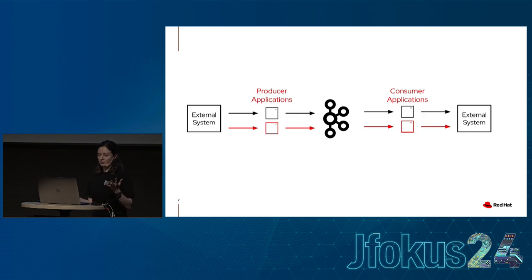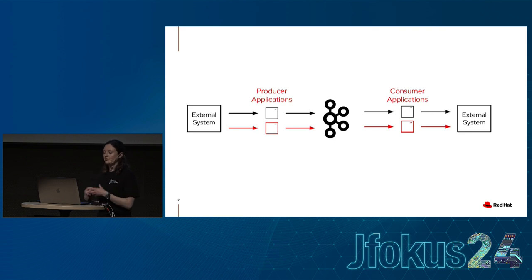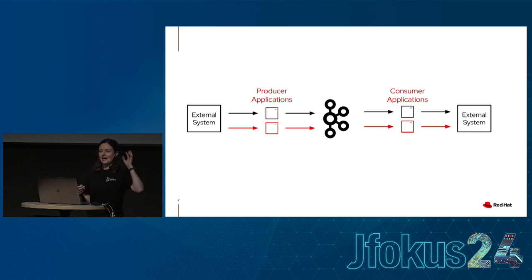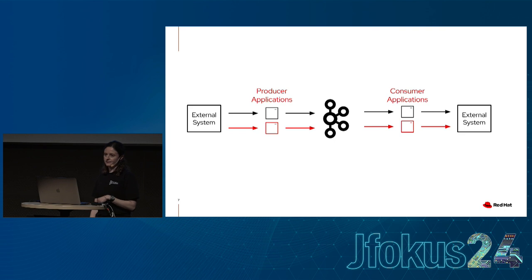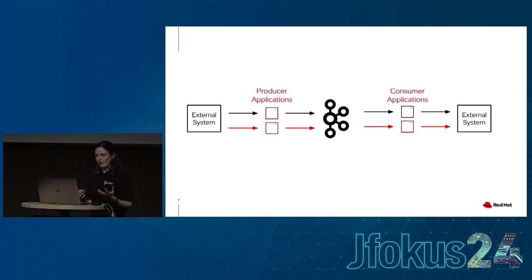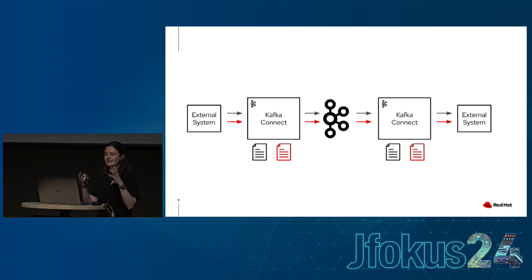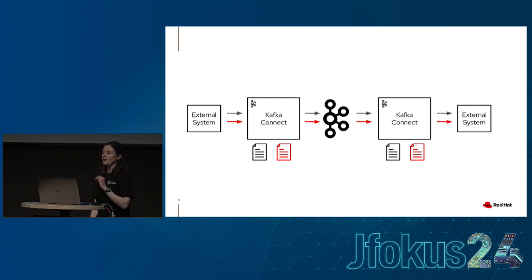An easy way to solve this problem is to write a producer application — one that produces messages into Kafka — or write consumer applications that pull messages from Kafka. But every single time you want to create a new pipeline that takes data from an external system into Kafka or vice versa, you have to write a new application, and in reality the differences between those applications aren't going to be that great. Kafka Connect sits in between your external system and Kafka and lets you deploy lots of different pipelines with only configuration.